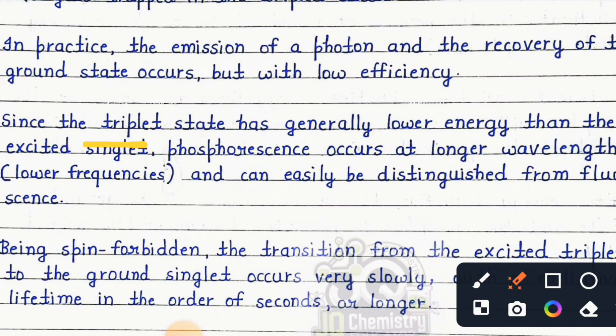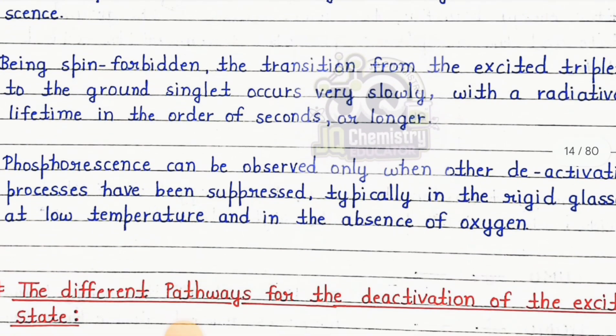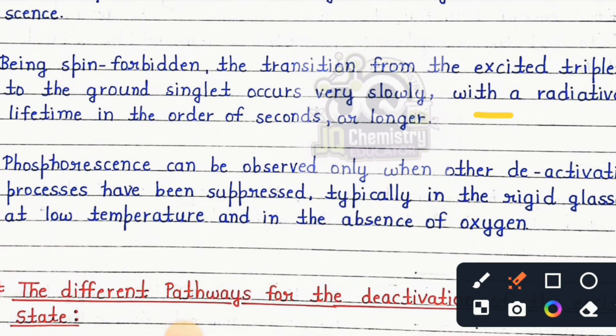Since the triplet state has generally lower energy than the excited singlet, phosphorescence occurs at longer wavelengths or lower frequencies and can easily be distinguished from fluorescence. Being spin forbidden, the transition from the excited triplet to the ground singlet occurs very slowly, with radiative lifetime in the order of seconds or longer. Phosphorescence can be observed only when other deactivating processes have been suppressed, typically in rigid glasses at low temperature in the absence of oxygen.